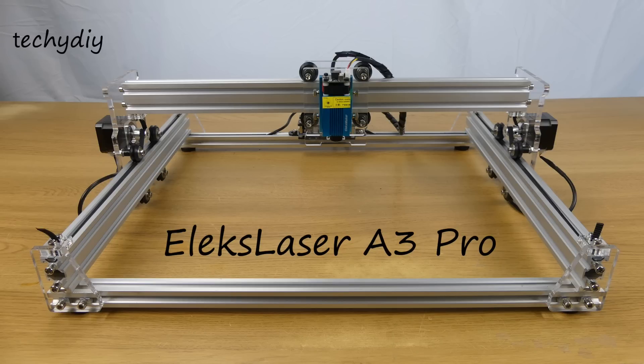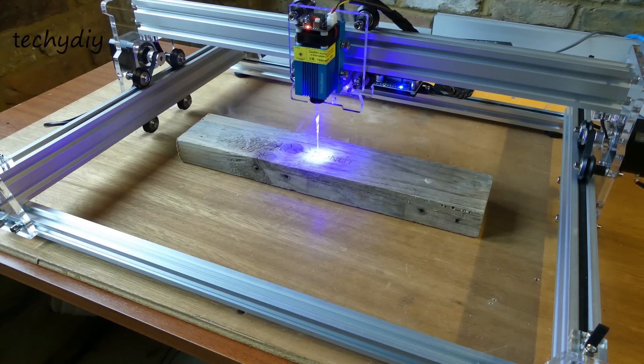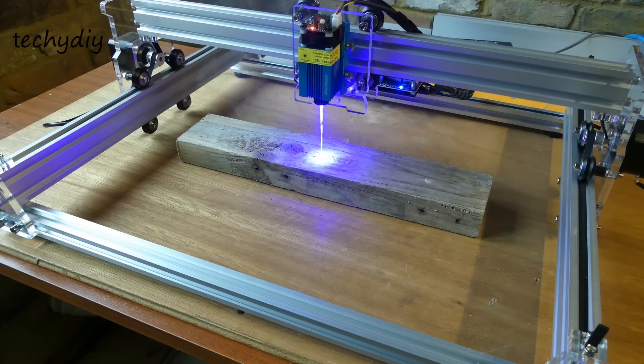Hi guys, in this video I'm going to look at the new version of the Elicus Maker A3 Pro laser engraver. I'm testing the 2500 milliwatt version and it currently costs around £175 or $240 from Banggood.